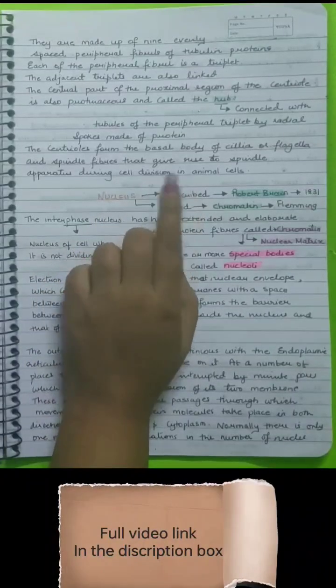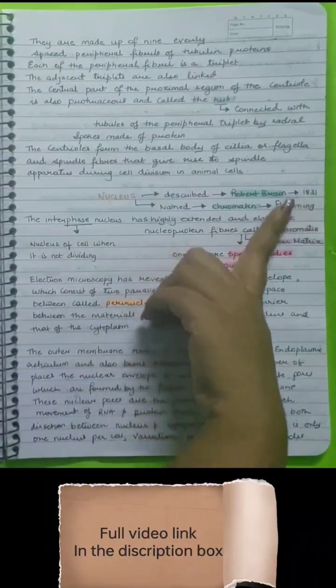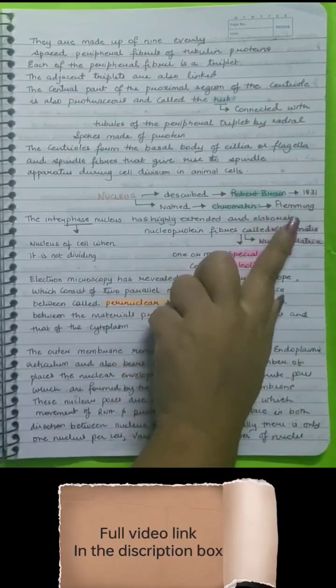The nucleus was described by Robert Brown in 1831, and chromatin was named by Fleming.